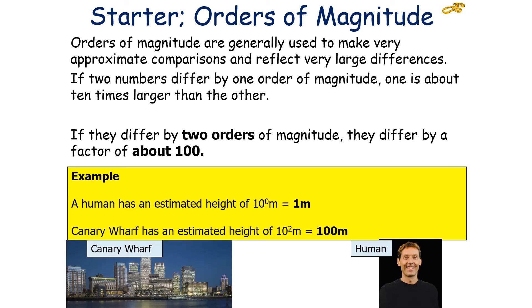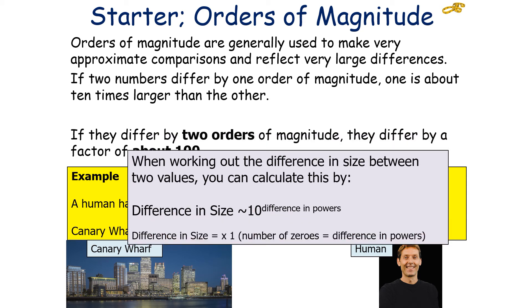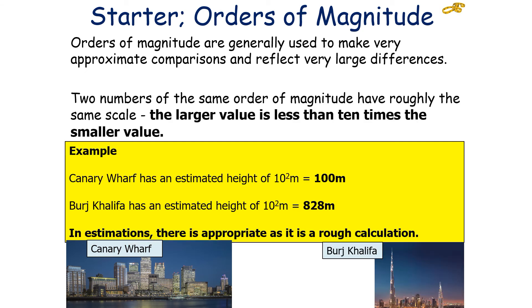It's important to note that orders of magnitude are generally used to make very approximate comparisons and reflect large differences. If two numbers differ by one order of magnitude, one is about 10 times larger than the other. If they differ by two orders of magnitude, they differ by about a factor of 100. An example would be, a human has an estimated height of 10 to the 0 meters, 1 meter. Canary Wharf, a tower building in London, has an estimated height of 10 to the 2 meters, so it's 100 meters. When we're working out the difference in size between two values, you can calculate it by difference in size is approximately 10 to the power of the difference in the powers. You'd have difference in size times by 1, and the number of zeros is the difference in powers.